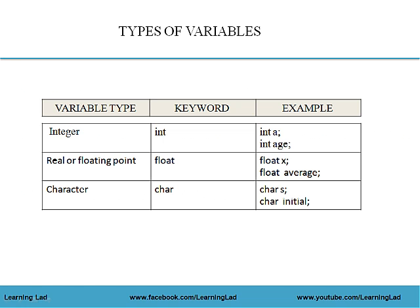Now we'll see what are the variable types and what keywords are associated with them. A variable type is the type of constant that the memory cell can store. For integer constants, we use the keyword int — for example, int a or int age. For real or floating point constants, we use the keyword float — for example, float x or float average. For character constants, we use the keyword char — for example, char s or char initial.